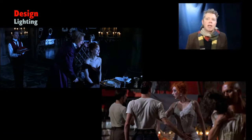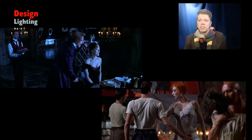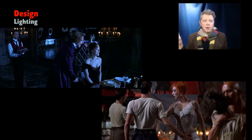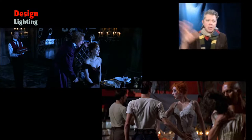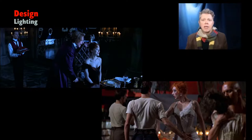Lighting is part of mise-en-scène. The way a scene is lit is obviously part of what's inside the frame. The sequence where the narcoleptic Argentinian performs 'Roxanne' in a tango, juxtaposed with the Duke and Satine having dinner and then him sexually assaulting her in the gothic tower, are lit in very distinct ways.